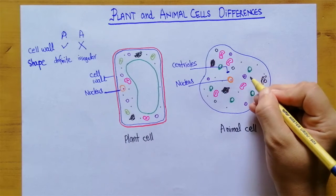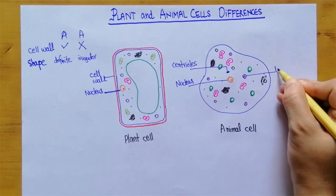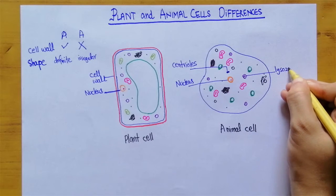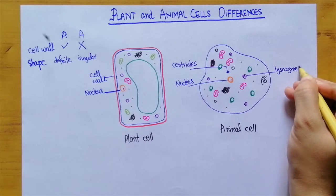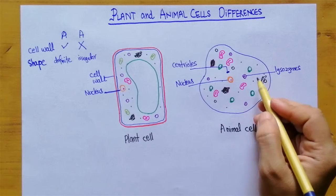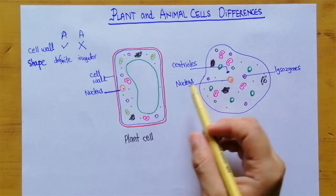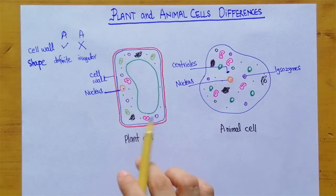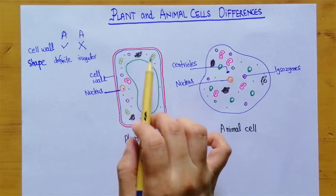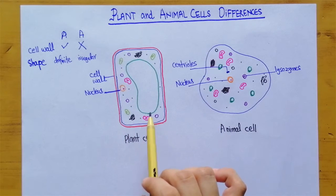Similarly, in animal cells we have many vesicles — here shown in purple — these are lysosomes. Lysosomes are present in animal cells, but in the case of plant cells we cannot see any lysosomes present.